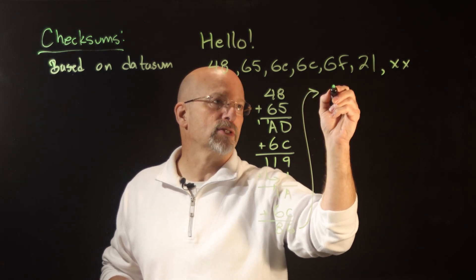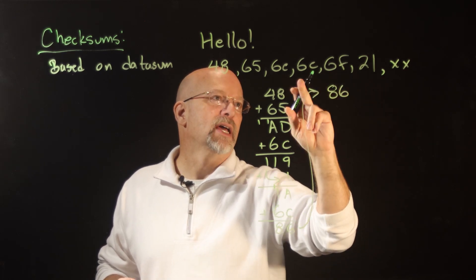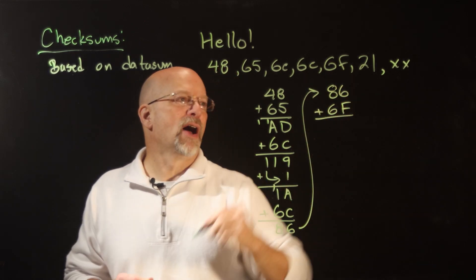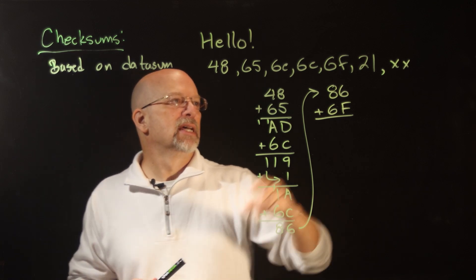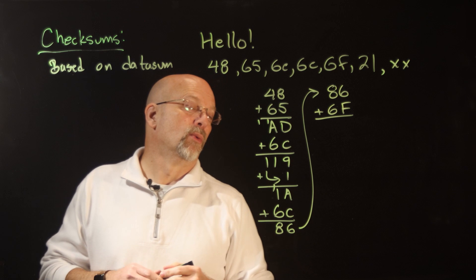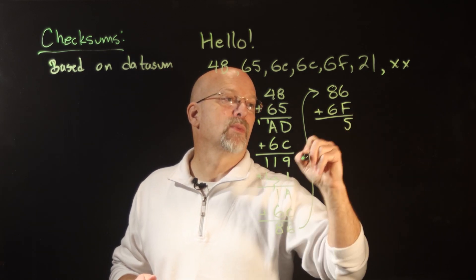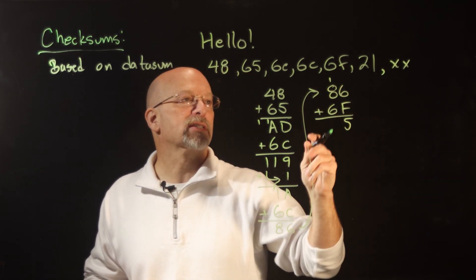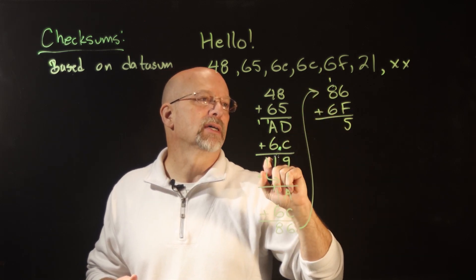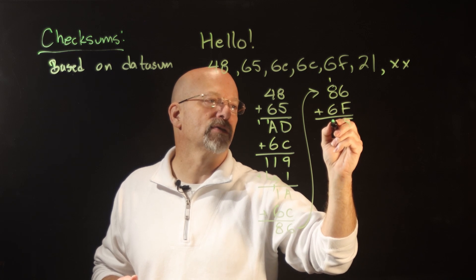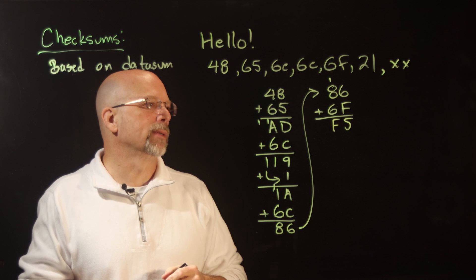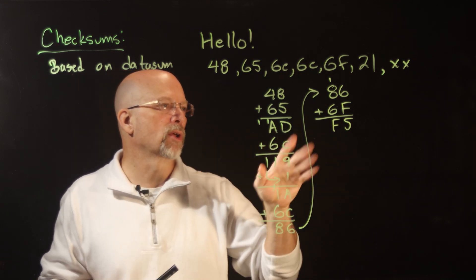Continuing with 86, we add 6F. F is 15, and 15 plus 6 is 21 — we pull 16 out of 21, leaving 5 with a carry into the next column. 1 plus 8 is 9, plus 6 is 15, which is F in hex. So we've got F5 at this point, with no carry out of the byte.